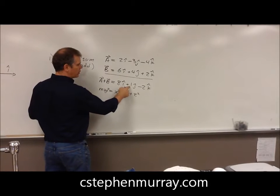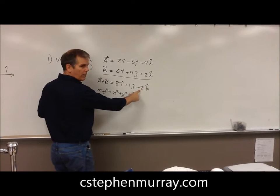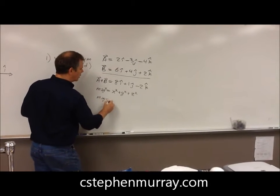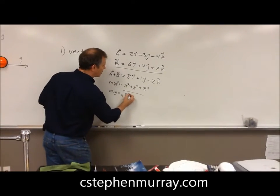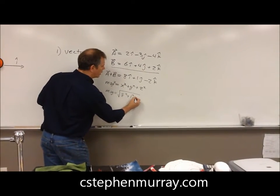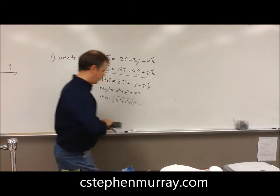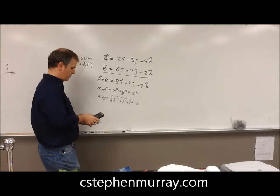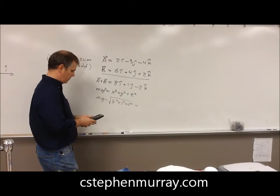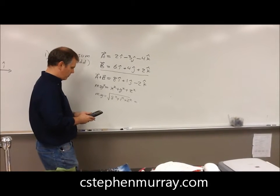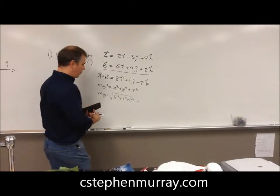So square it, square it, square it, that will be positive, and take the square root. So the magnitude would equal 8 squared plus 1 squared plus 2 squared. And that number gives me 8.5.